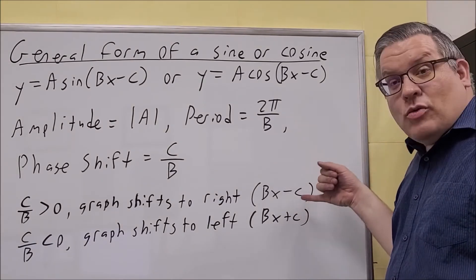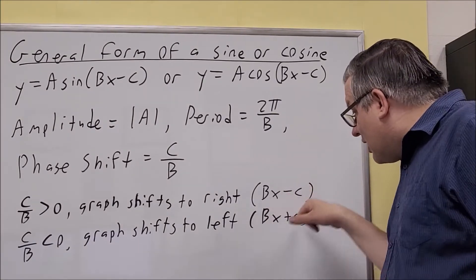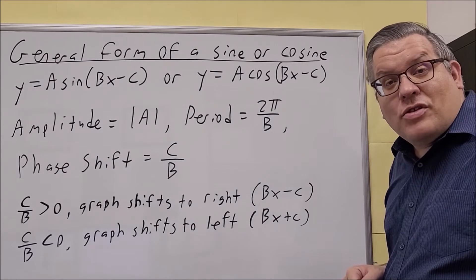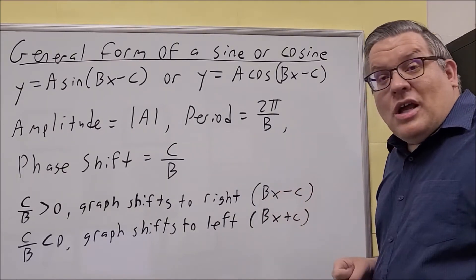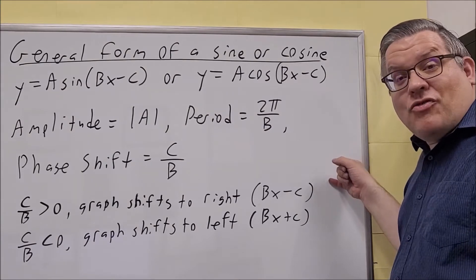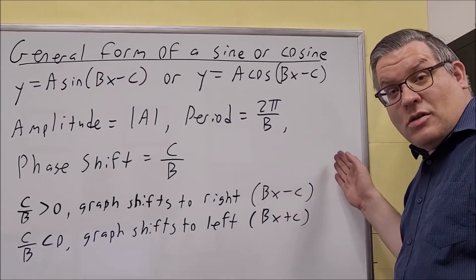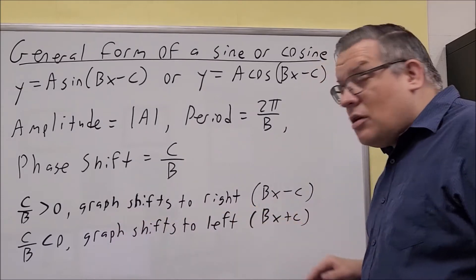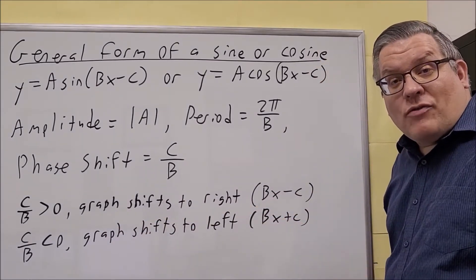But in actuality, what's happening is if you have a plus that's inside here, that's going to tell you it's going to move to the left. If it's a negative, it's going to move to the right. So in this case here, you would have a positive phase shift, so it would move to the right. If you have a negative phase shift like you have here, that means the graph is going to move to the left.